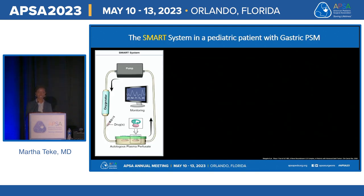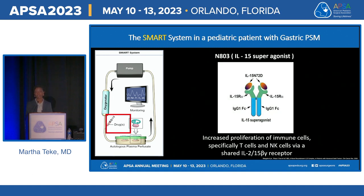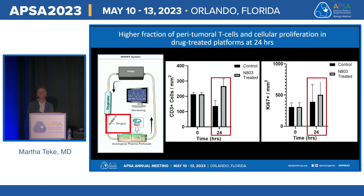We placed HER2-positive tissue into the SMART system and tested N803, an IL-15 super agonist that increases immune cell proliferation — specifically T and NK cell proliferation for tumor-specific cytotoxicity. In just 24 hours, we observed an appropriate response: increased CD3-positive peritumoral T cells and increased proliferation as evidenced by Ki-67 in drug-treated versus control. The extrapolation of this data should be limited given the sample size of one and that this drug is typically used in combination — but it does demonstrate our model can maintain tissue and show appropriate drug responsiveness.